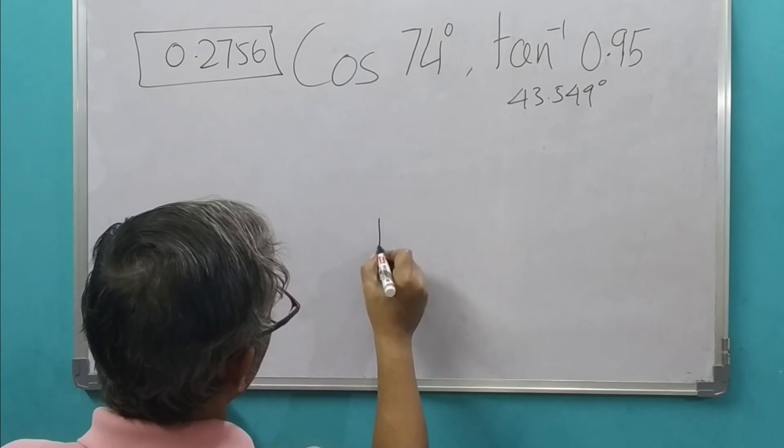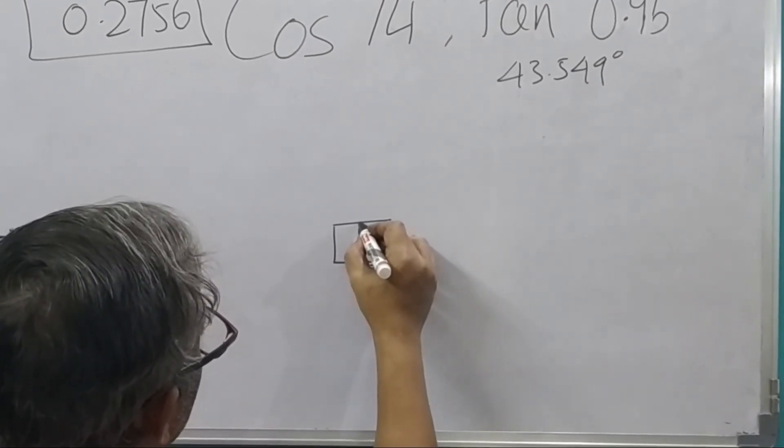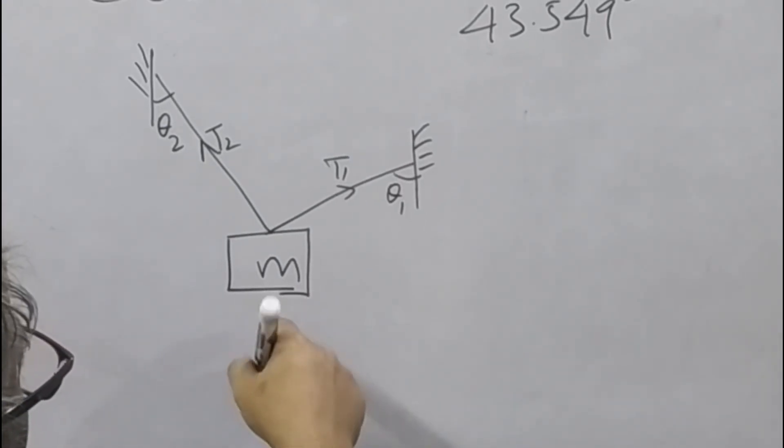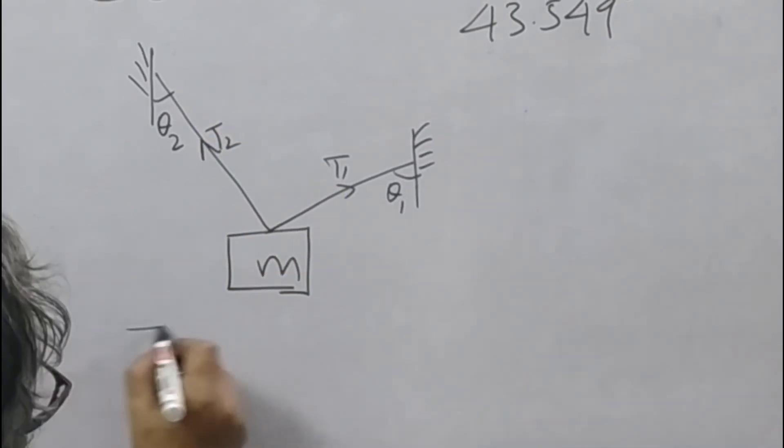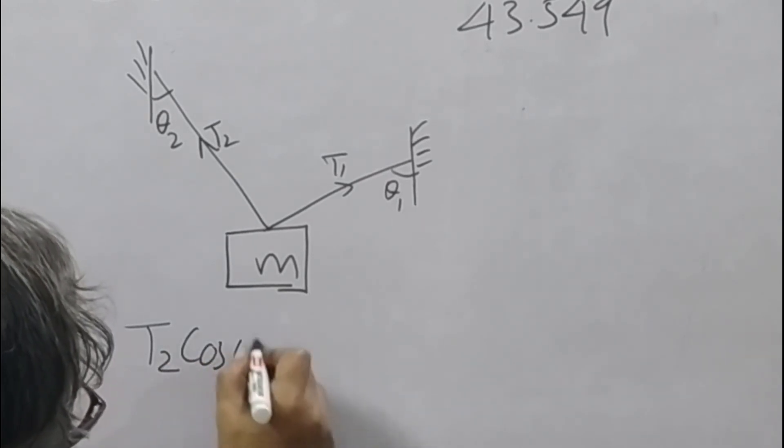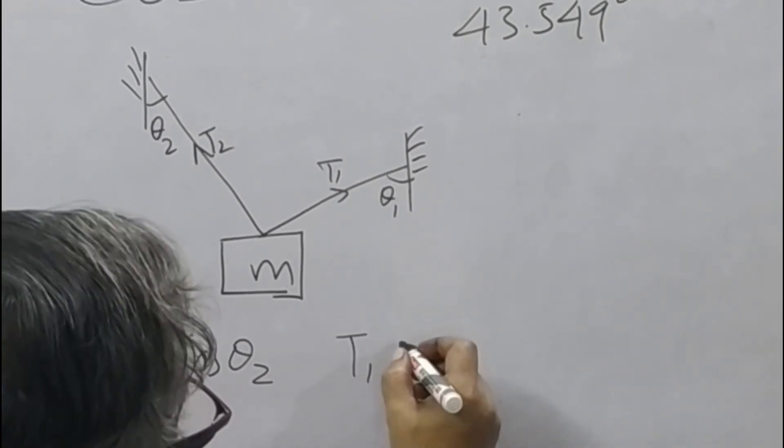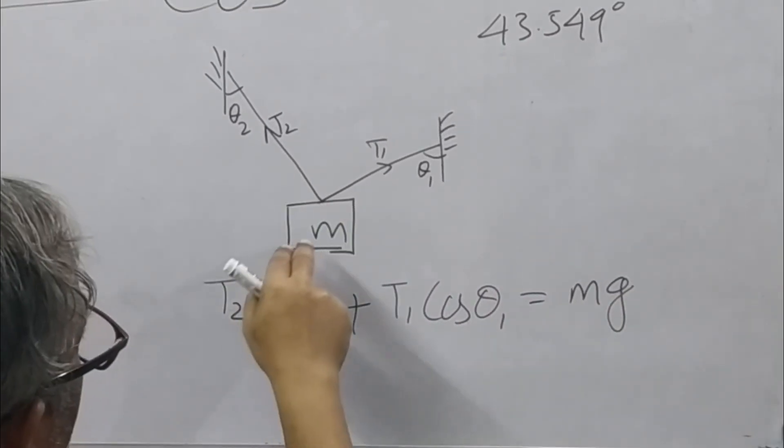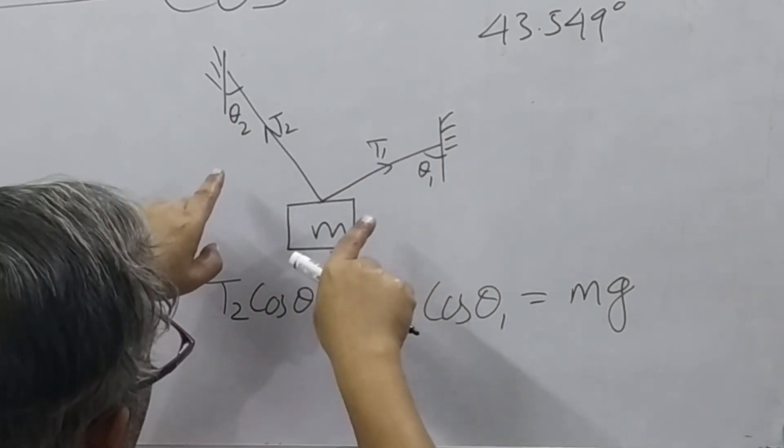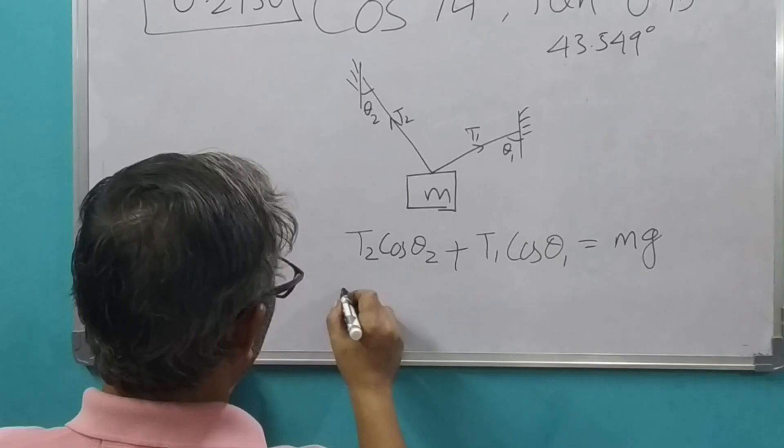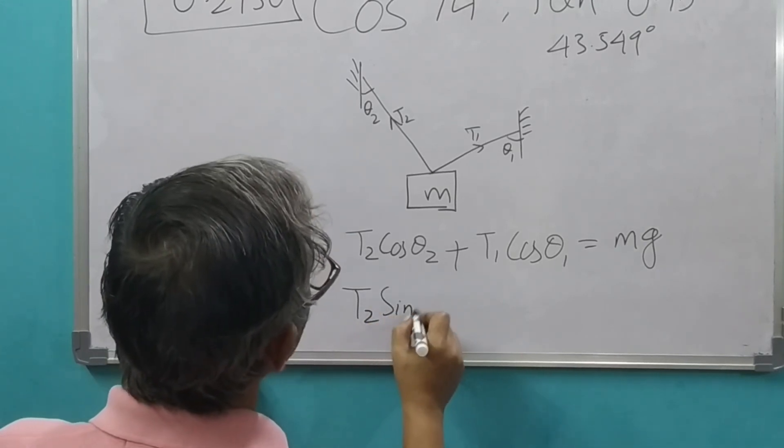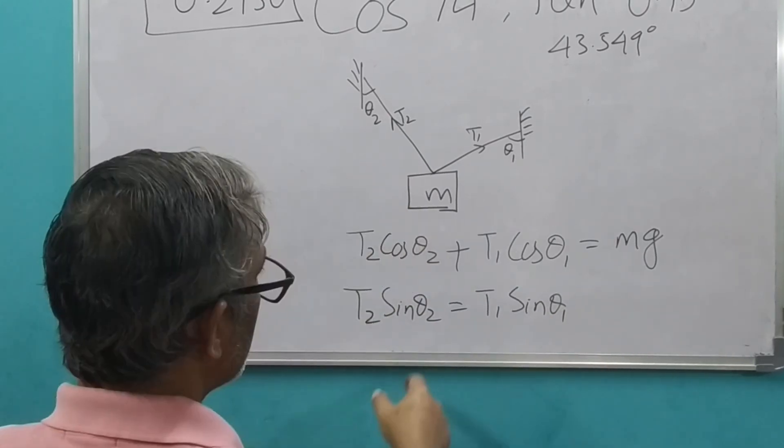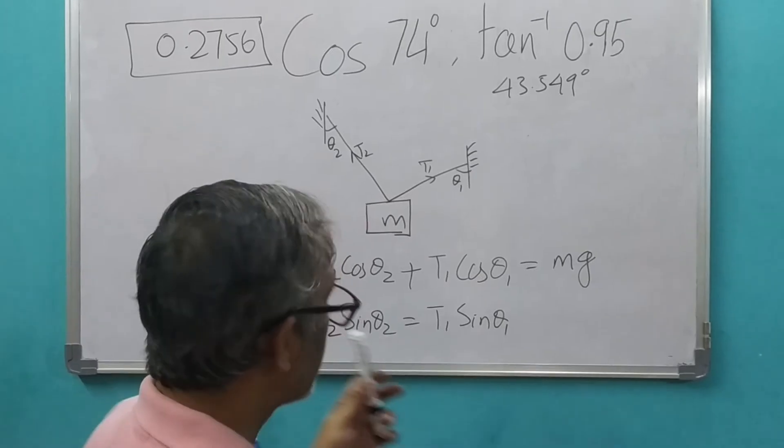And what about these things? Say you have a mass hanging here supported by two wires. The weight of the mass will be balanced by the vertical components of these tensions. That means T2 cos theta 2 and for T1, it will be T1 cos theta. Then the horizontal components of these two individual tensions have to be cancelled out for equilibrium. That means T2 sin theta 2 should be equal to T1 sin theta 1. From this, you can very easily find out the values of T1 and T2.